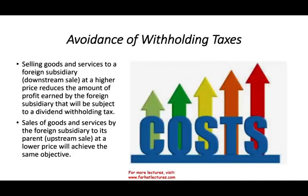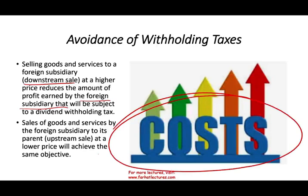To summarize: selling goods and services to a foreign subsidiary — a downstream sale — at a higher price reduces the profit earned by the foreign subsidiary that is subject to dividend withholding tax. Conversely, sales of goods and services by a foreign subsidiary to its parent at a lower price achieves the same objective. By managing costs through higher transfer prices, the subsidiary shows lower profit, and when remitting funds, less withholding tax is paid.